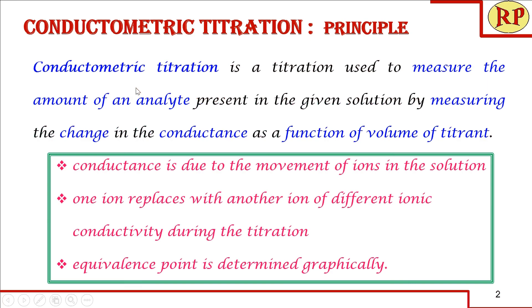Conductometric titration is a titration used to measure the amount of an analyte present in a given solution by measuring the change in conductance as a function of volume of titrant. The conductance is mainly due to the movement of ions — that is, electricity is passed through the ions. During the titration, one ion is replaced by another ion of different ionic conductivity, so the conductance values keep changing throughout. At the end of the titration, we determine the equivalence point graphically after plotting a titration curve.